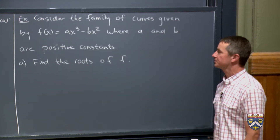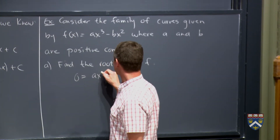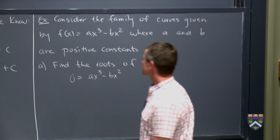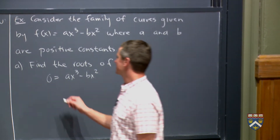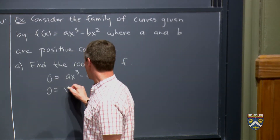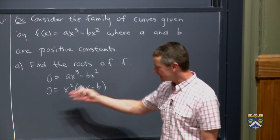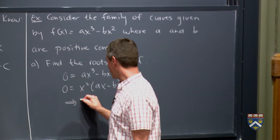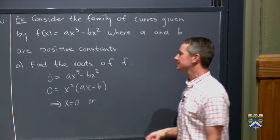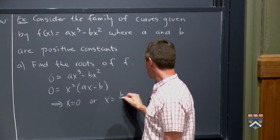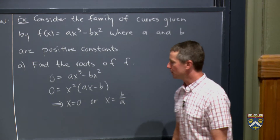We're going to start with just finding the roots, so this is not a calculus problem — it just means setting the equation equal to zero. It would be very dangerous to divide by x² here because we would lose one answer. Instead, we factor out x² and we get x²(ax minus b) = 0. This means either x² = 0, so x = 0, or ax minus b = 0, giving x = b over a. So every member of this family has two roots: one at zero and one at b over a.